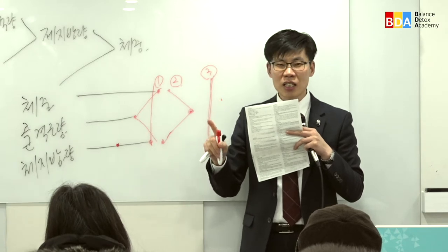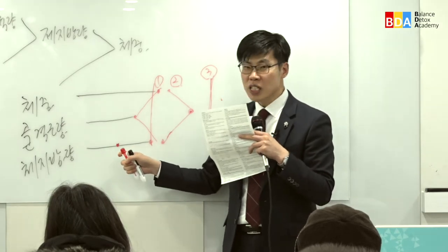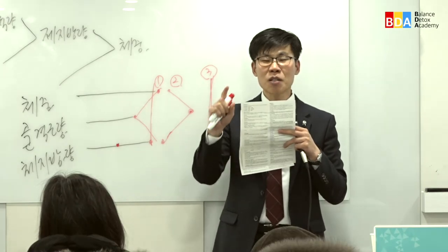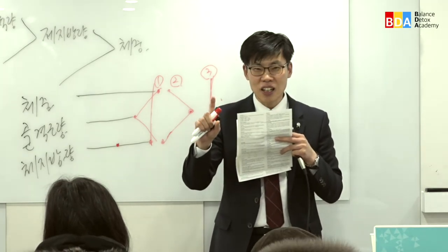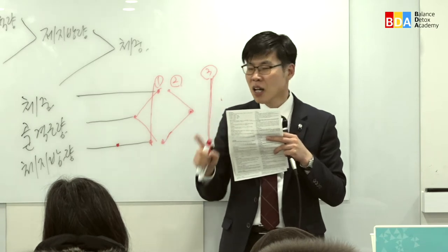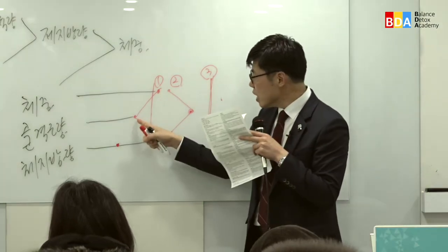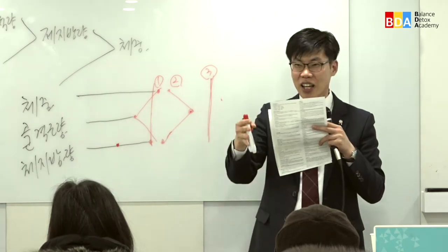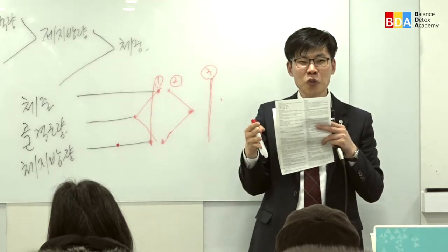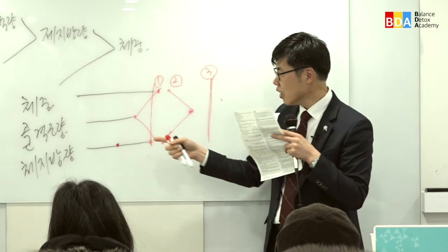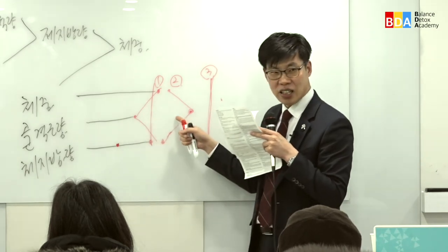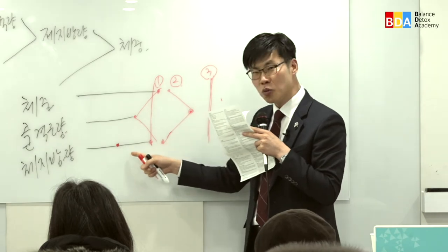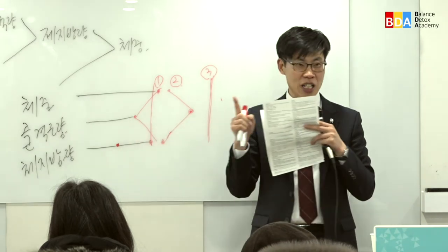지방이 어느 정도 있어야 하는데, 아예 없으면 생리불순이나 호르몬 문제가 있을 수 있는 확률이 높습니다. 지방도 어느 정도는 있어야 합니다. 골격근량이 적게 나오면 에너지 레벨이 떨어지고 힘이 없고 무기력합니다. 골격근량을 늘리려면 체지방량도 줄이고 근력운동을 하셔야 합니다.